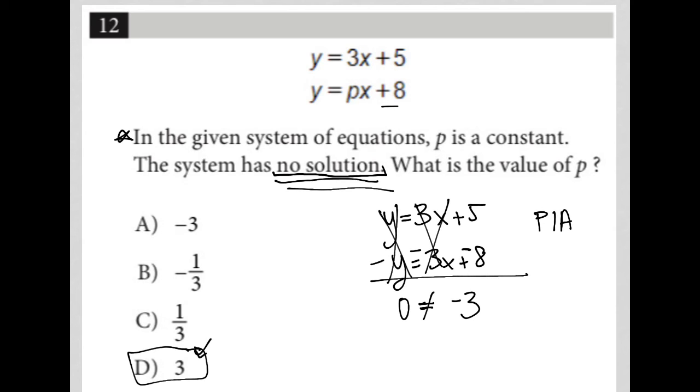But realistically, the reason why we knew three was correct was based upon the definition of what it means for a system of equations to have no solution. In order for a system of equations to have no solution, both the Y variables and the X variables must cross out.